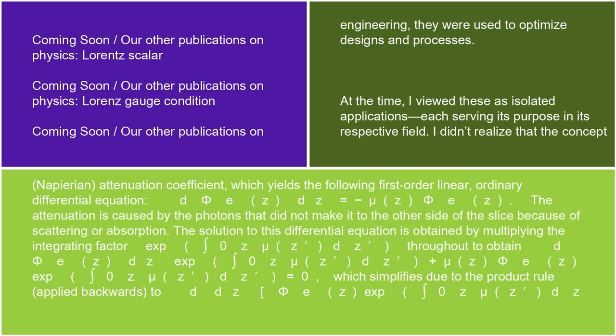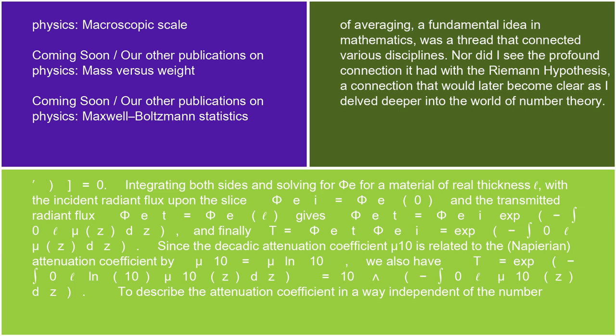The attenuation is caused by the photons that did not make it to the other side of the slice because of scattering or absorption. The solution to this differential equation is obtained by multiplying the integrating factor exp(∫₀ᶻ μ(z')dz') throughout, which simplifies due to the product rule to d/dz[Φ_e(z)·exp(∫₀ᶻ μ(z')dz')] = 0. Integrating both sides and solving for Φ_e for a material of real thickness ℓ, with incident radiant flux Φ_e,i and transmitted radiant flux Φ_e,t, gives: Φ_e,t = Φ_e,i · exp(−∫₀ℓ μ(z)dz), and finally T = Φ_e,t/Φ_e,i = exp(−∫₀ℓ μ(z)dz).